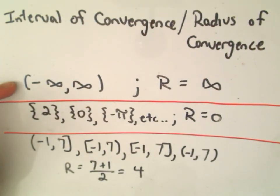If your interval of convergence is all real numbers, negative infinity to positive infinity, we simply say that the radius is equal to infinity.